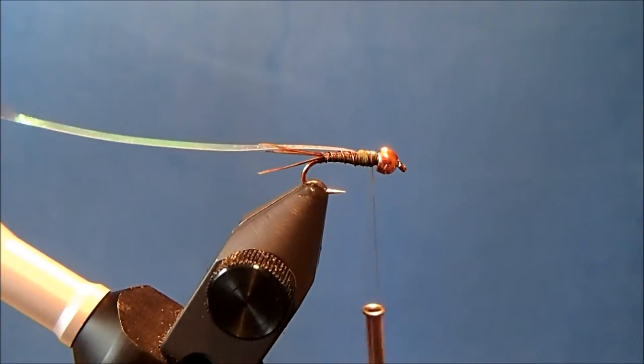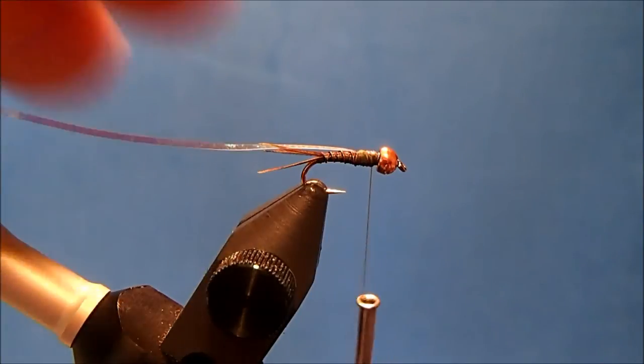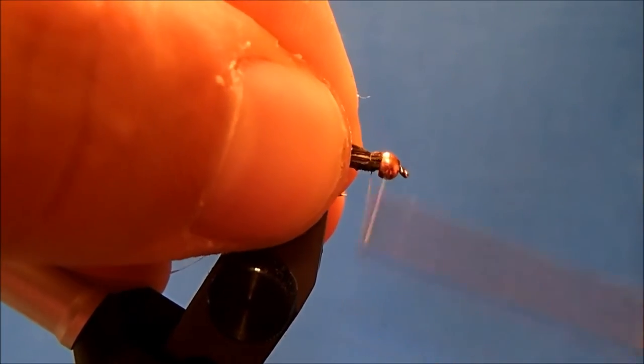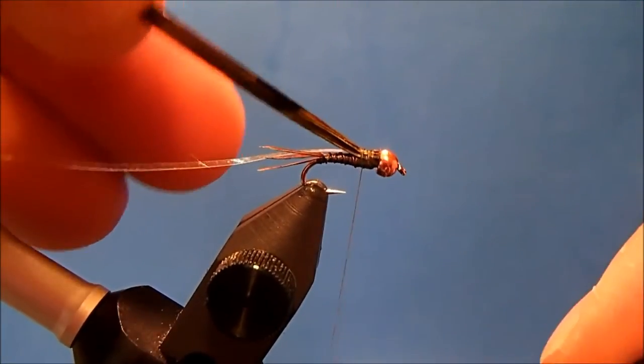Then I'm going to come back to my pheasant tail and take off maybe six fibers. I'll make a straight cut here so I can tie it in, again right on top, back to where I tied in my pearl tinsel.